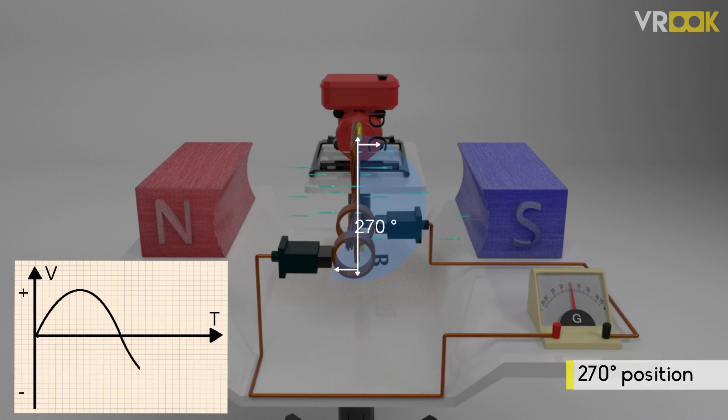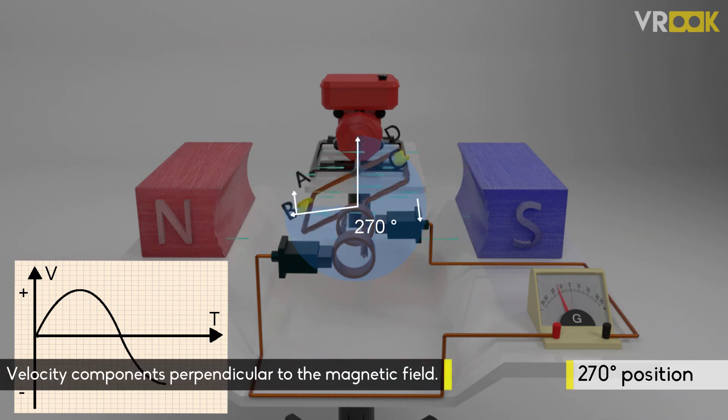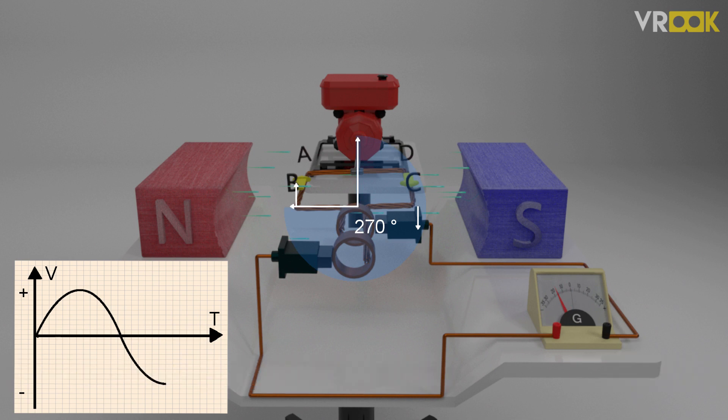At 270 degrees, the components will be perpendicular to the magnetic field again and we get maximum EMF. We can see that in the graph but this time, it will reach the negative peak value.